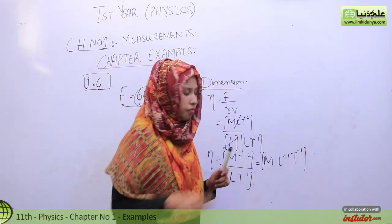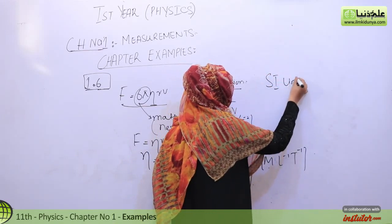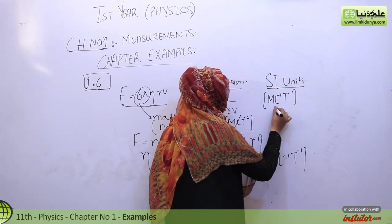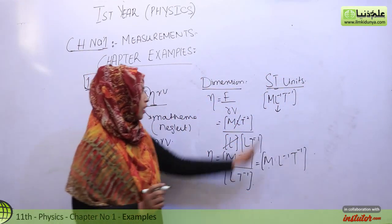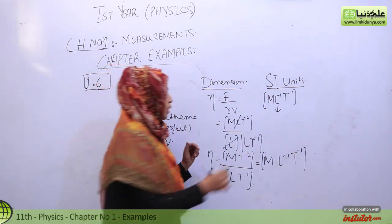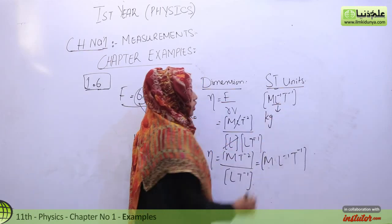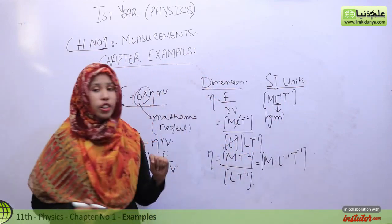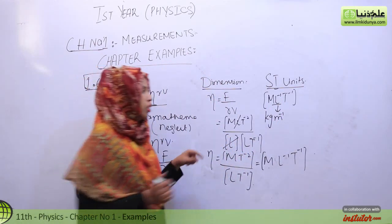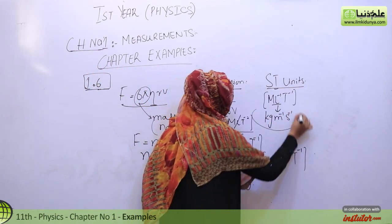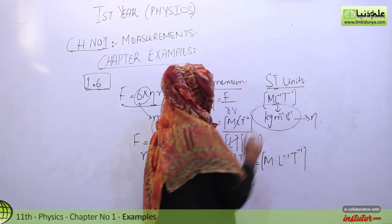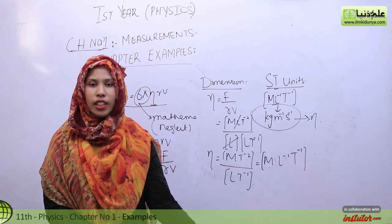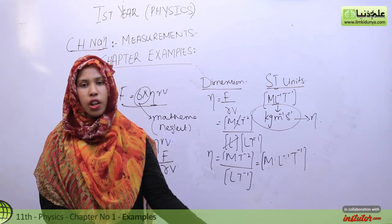So the dimension of eta comes out to be ML⁻¹T⁻¹. Now for the SI units: M represents mass, so its unit is kilogram; L represents length with unit meter, and since the power is −1 it is per meter; T represents time with unit second, and since the power is −1 it is per second. Therefore the SI unit of eta is kg·m⁻¹·s⁻¹. This completes numerical 1.6 and all the example problems of Chapter 1.